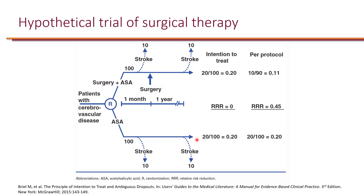Now, let's also do a per-protocol analysis. The protocol says patients had to receive surgery to be included in the study. Ten patients in the surgical arm had a stroke before they received surgery, so they were no longer candidates for surgery. Excluding these 10 patients leaves 90 patients in the intervention group, of whom 10 had stroke — so the stroke rate in the intervention group was actually 11%.